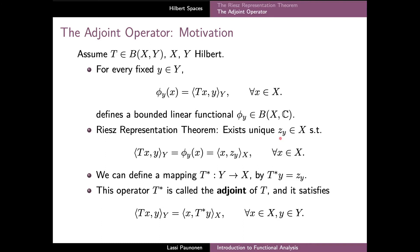Since phi_Y is a bounded linear functional, the Riesz representation theorem implies that there exists a unique element zeta_Y of X such that all the values of this functional are given as inner products between the point X and the fixed vector zeta_Y. From this we can immediately observe that since zeta_Y is unique and exists for every fixed element Y, we can define a mapping denoted by T* such that the value of T* at Y is defined precisely to be the element zeta_Y.